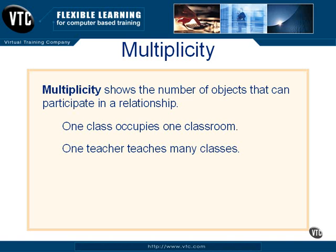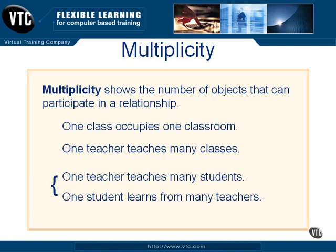What about a many-to-many relationship? The way to keep it clear is to think of it as two one-to-many relationships. For example, one teacher teaches many students, and one student learns from many teachers. Thinking of a many-to-many relationship in those terms helps keep things clearer.